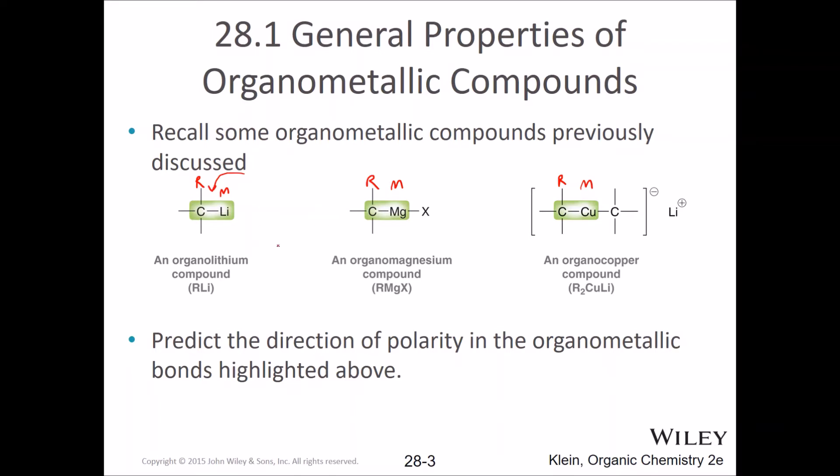To do that we need to think about electronegativity, something you've gotten pretty good at in principles. Predict the direction of polarity in the organometallic bonds highlighted above. The electronegativity of carbon is about 2.5 and metals are low, let's say 1. So 2.5 to 1. The difference in those dictates how polar this bond is. Can you see the difference is about 1.5?